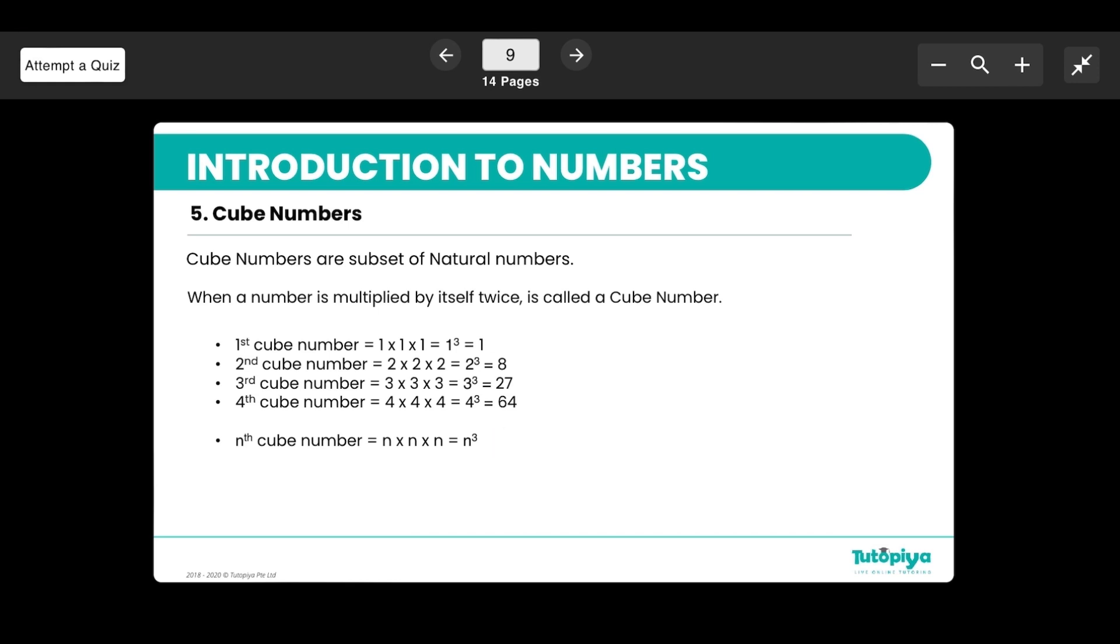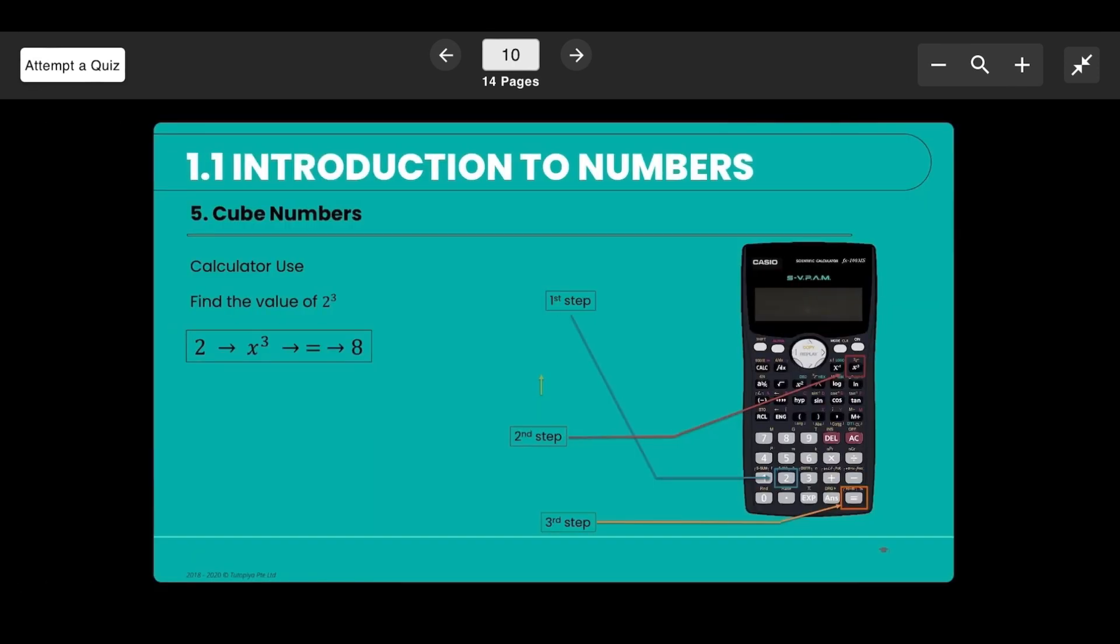Again in general you can write any cube number as n cubed which is n times n times n. Some help and guidance in how to put in the power three in your scientific calculators please feel free to refer to this diagram.